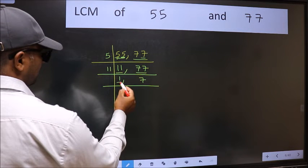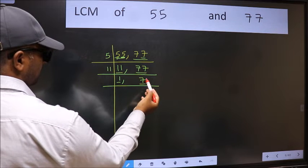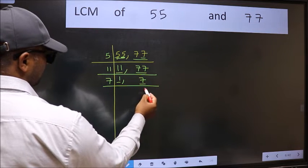Now we got 1 here. So focus on the next number 7. 7 is a prime number, so 7 once 7.